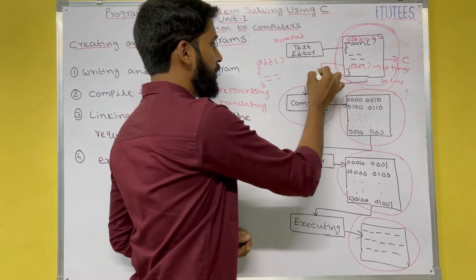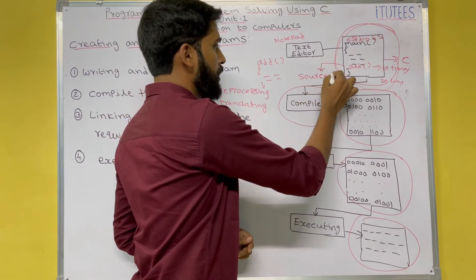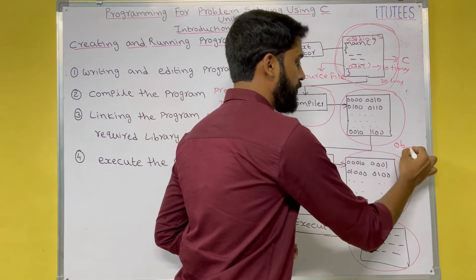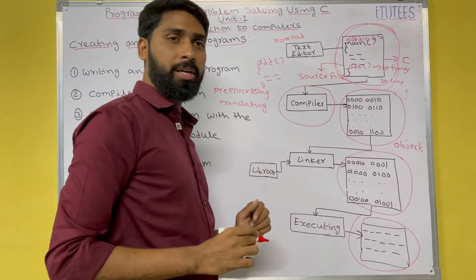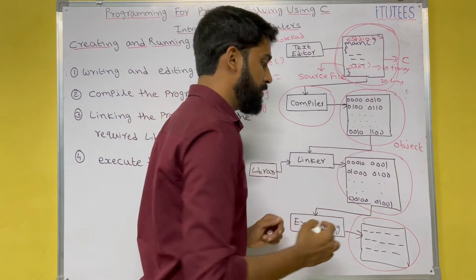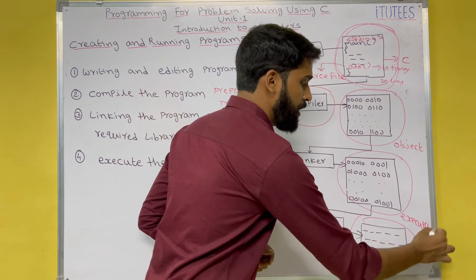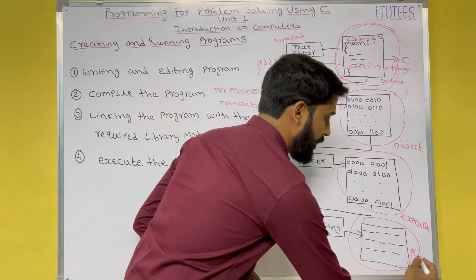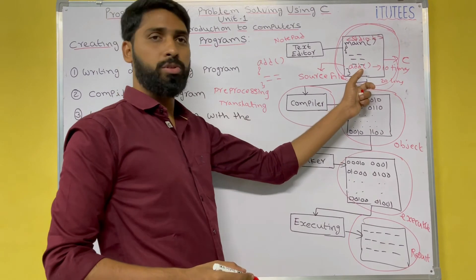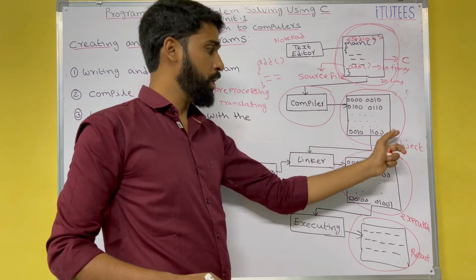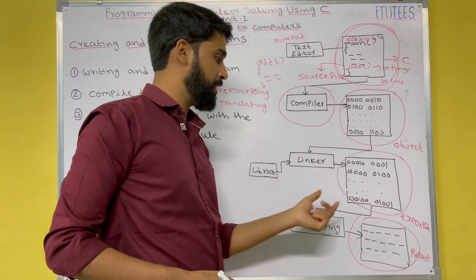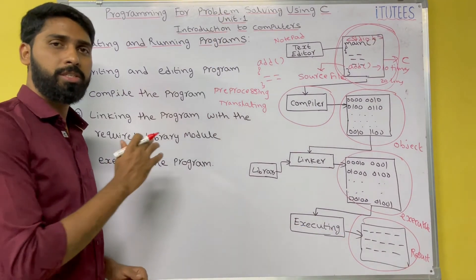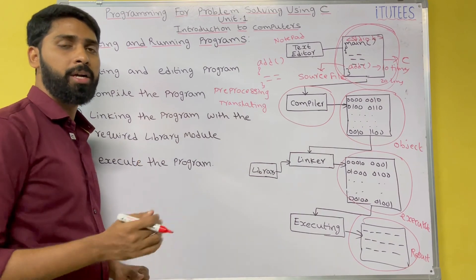In the first step, the file we write is called the source file. After compilation, we get a file called the object file — a .obj file. After the linker, we get an executable file. After execution, we get some output, which we call the result. So: source file → compilation → object file → linking → executable file → execution → result. These are the steps you follow when you write and execute programs.